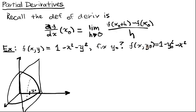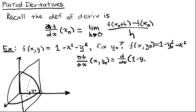This is just a function of x, and we know how to take a derivative of just a function of x. We're going to say that df/dx of (x, y₀) equals d/dx of (1 - y₀² - x²). Since 1 - y₀² is constant, the derivative of anything constant is 0 — using linearity of the derivative. So that part is 0, and then we have minus 2x. You remember how to differentiate polynomials — this is just negative 2x.